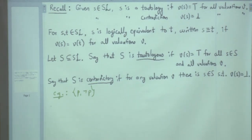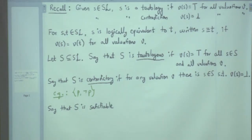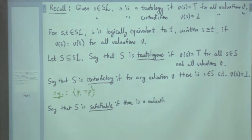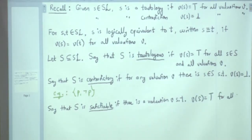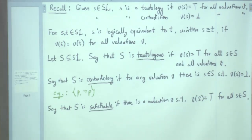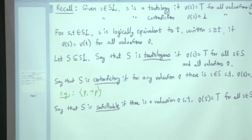S is satisfiable if there is a valuation V such that V of S is true for all S in capital S. Satisfiable means at least one valuation makes all the formulas in capital S true. For example, singleton {P} is satisfiable.